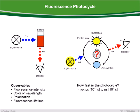A laser pulse excites an electron from the ground state into the excited state. There the electron remains until it decays back to the ground state by emitting a fluorescence photon. This photon is detected by a very sensitive photon detector. We are simply measuring the time between the laser pulse and the arrival of the photon at the detector. For standard fluorescence dyes, this time is in the range of some nanoseconds.